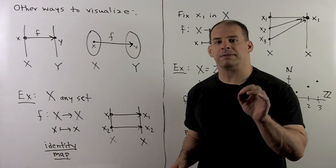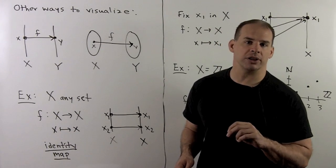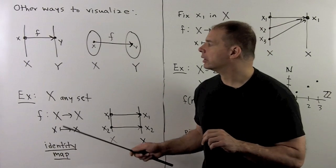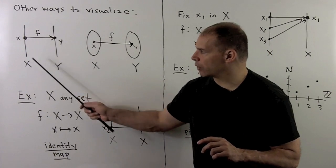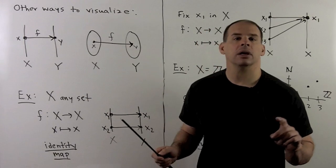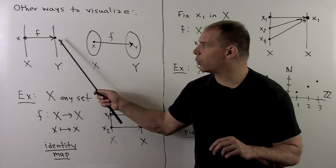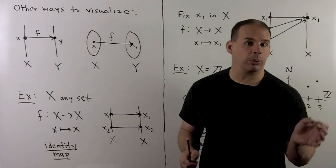Instead of visualizing our function as a graph on a set of perpendicular axes, we could also represent our function the following ways. I could separate our axes apart. So, this axis represents set x. This one represents set y. Then we'll just draw in an arrow carrying our point x to y by f.